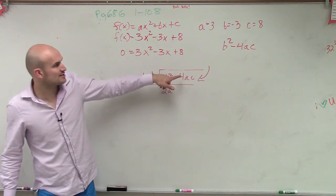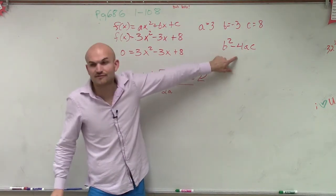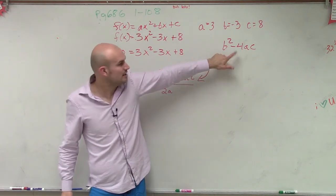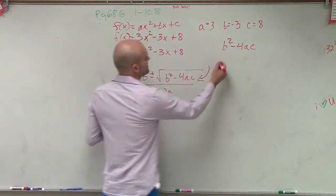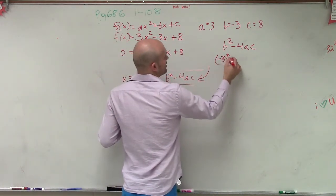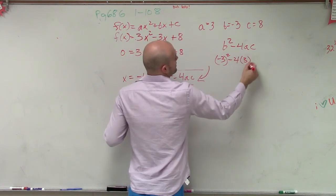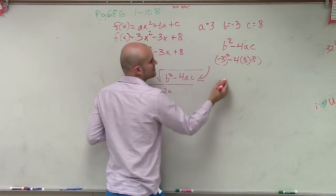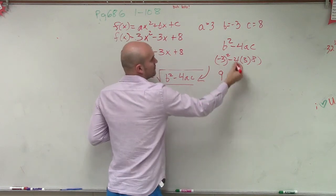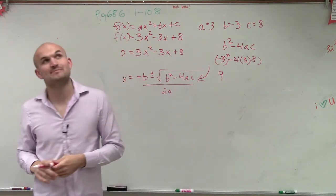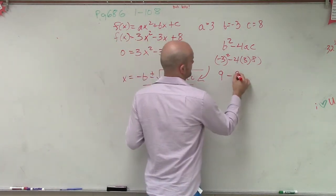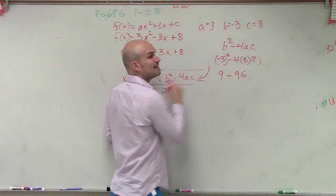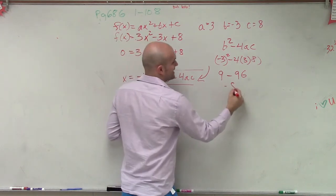On your quadratic formula, you can remember, I just need to figure out what this value is. Because whatever this value is, that's what I'm going to take the square root of. So I do (-3)², because that's my b squared, minus 4 times 3 times 8. So (-3)² is going to be 9. 4 times 3 is 12 times 8, which would be 96.